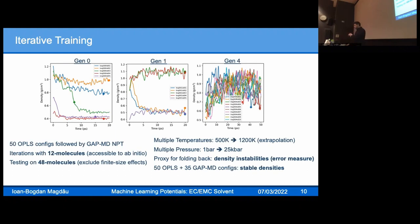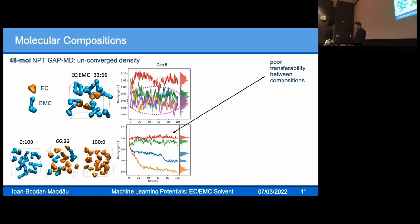After 50 OPLS configs and 35 GAP-MD configs, we obtain already something that looks like stable densities. Problem solved? Not really.